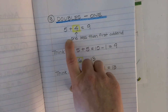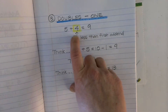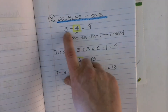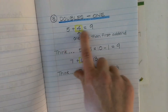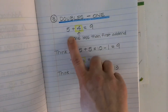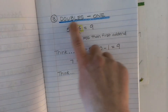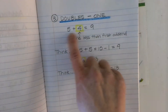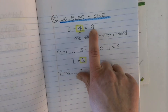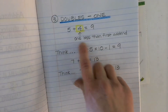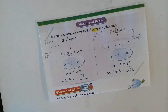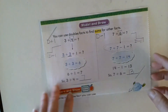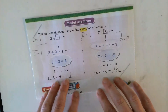So five-four, seven-six, thirteen-twelve, eight-seven — that would be an example of a doubles minus one addition fact. Don't get confused: just because it's called doubles minus one does not mean it is a subtraction fact. It is still an addition fact, but the second addend is one less than the first addend.